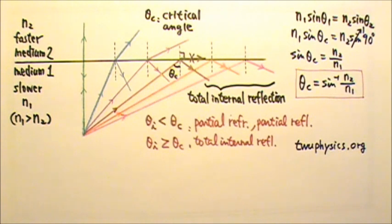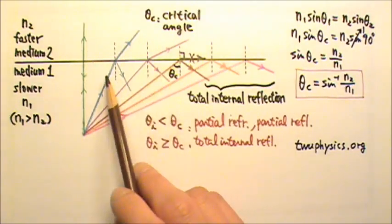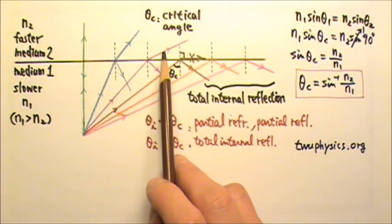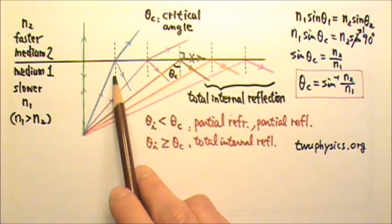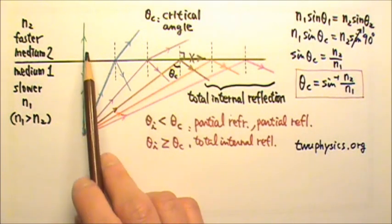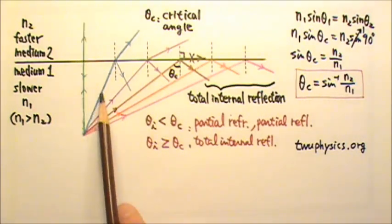you may also notice that when there is partial reflection and partial refraction, the amount of reflection increases and the amount of refraction decreases as the angle of incidence increases. It makes sense that we can have the most light going through to the other side when we shoot the light more or less straight through.